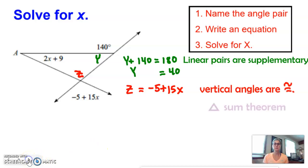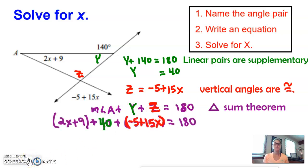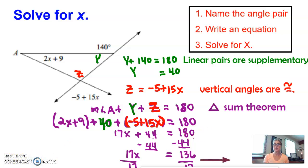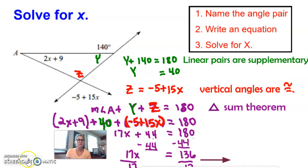Now let's put it together using the triangle sum theorem, meaning I add all three angles of the triangle together to get 180, make the substitutions for what the angles are, combine your like terms, then I'm going to subtract 44 from both sides, and then divide by 17. Once I divide by 17, I get my final answer of 8. So 136 divided by 17 is 8.